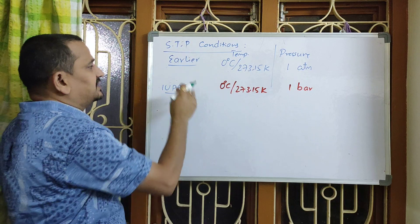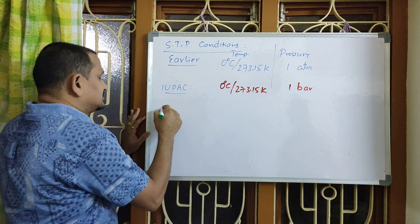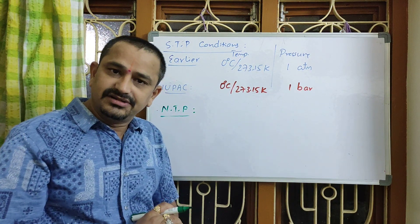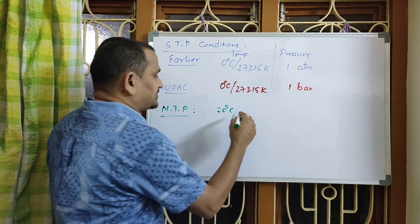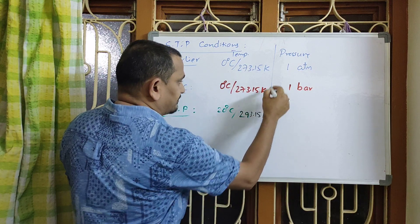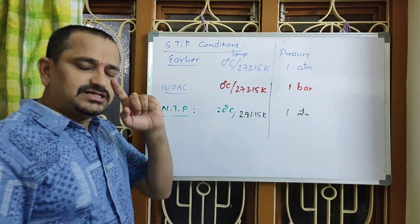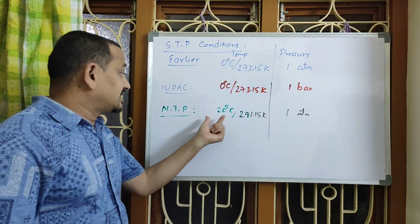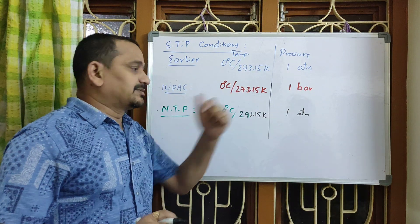These two come under STP conditions — earlier and present. We have another set of conditions called normal temperature and pressure conditions, NTP. According to which, 20 degrees Celsius or 293.15 Kelvin, and 1 atmospheric pressure. This set of conditions is taken as NTP conditions. Do remember these values: 20 degrees Celsius or 293.15 Kelvin and 1 atmospheric pressure.